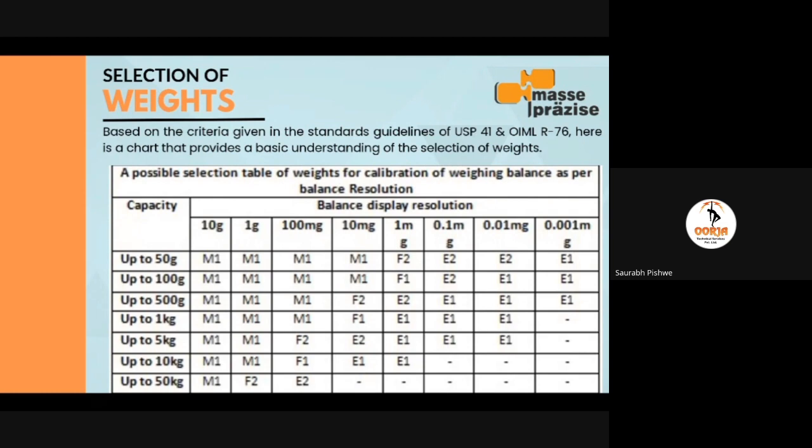We have distributed the maximum capacity into points: 50 grams, 100 grams, 500 grams, 1 kg, 5 kg, 10 kg, and 50 kg. We have also classified balances according to their display resolution — starting from micro balance at 0.001 mg, then 0.01 mg semi-micro balance, then analytical balance, and then normal balances.